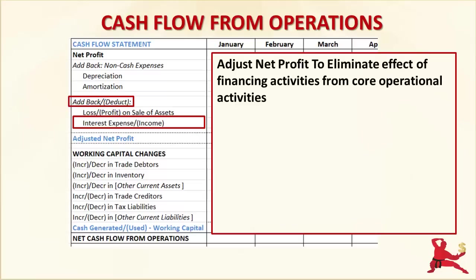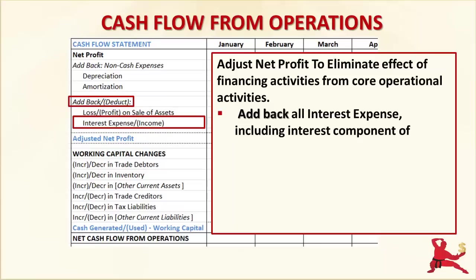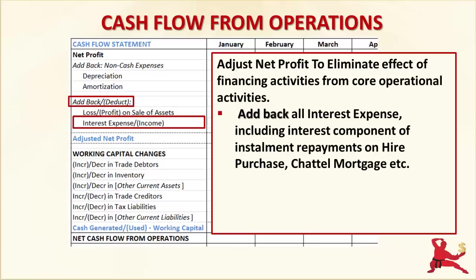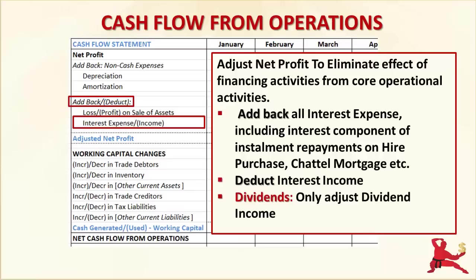I prefer this approach because it enables you to assess your core business operational strategies separately from your financing strategies. If your business receives dividends from its investments, you would make the same type of adjustments for dividend income, assuming that earning dividends isn't your core business.